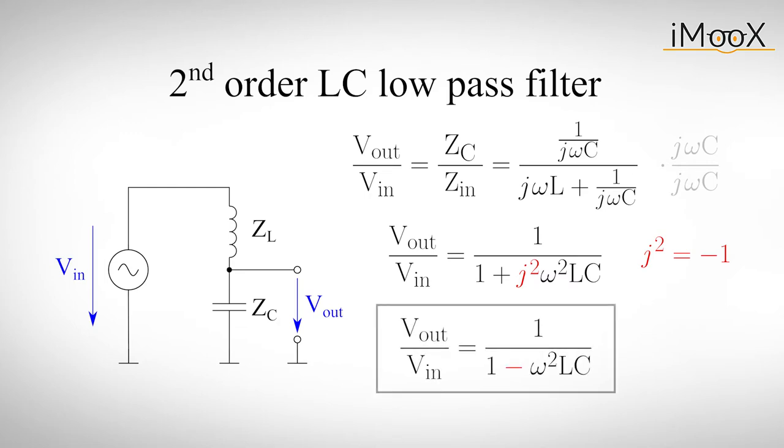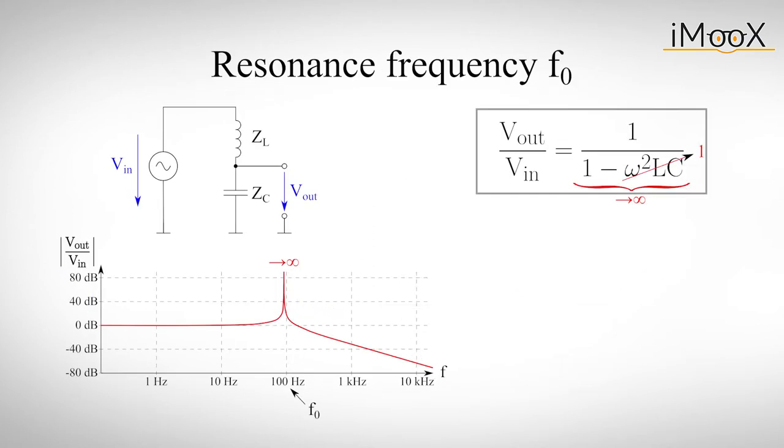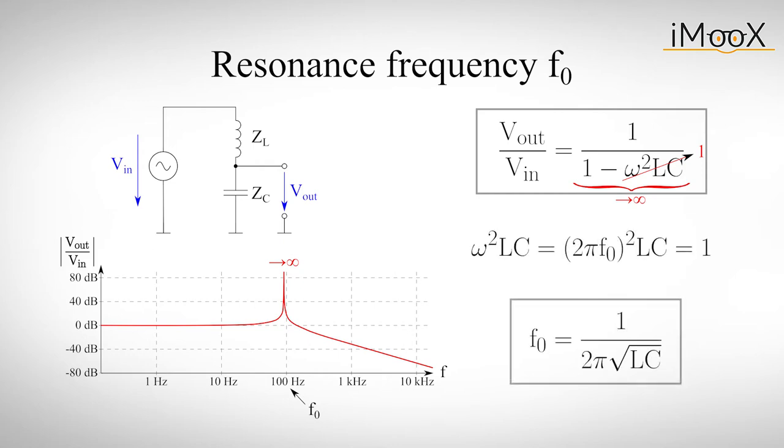First, we can see that this term gets rapidly smaller for higher frequencies, since omega in the denominator is squared. Secondly, we notice that this expression can approach infinity, if omega squared times LC becomes one. This will happen at one particular frequency. We can calculate this so-called resonance frequency. To do so, we set omega squared times LC to one, and we get the frequency of one over two times pi times the square root of LC.